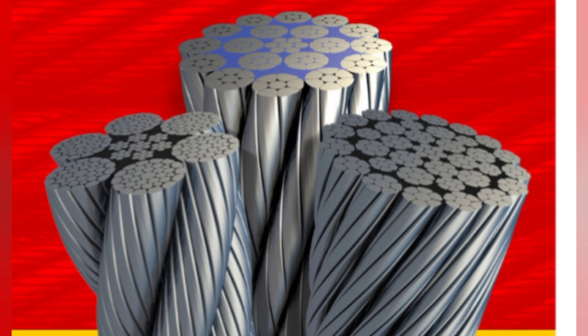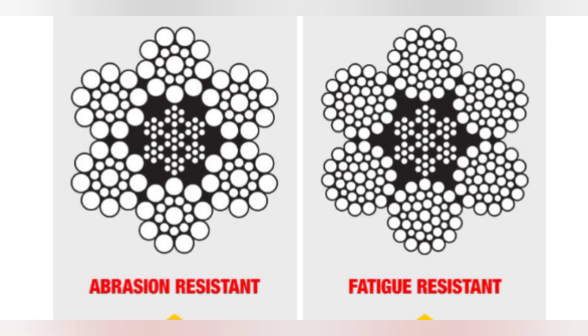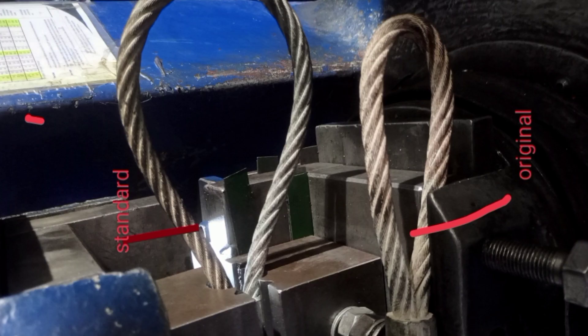Direction and type of lay refer to the way the wires are laid to form a strand — either right or left — and how the strands are laid around the core: regular lay, lang lay, or alternate lay. In regular lay, the wires line up with the axis of the rope and the direction of wire lay in the strand is opposite to the direction of strand lay; regular lay ropes are more resistant to crushing forces, more naturally rotation resistant, and spool better on a drum. In lang lay, the wires form an angle with the axis of the rope and the wire lay and strand lay go in the same direction, giving greater fatigue resistance and abrasion resistance. Alternate lay consists of alternating regular lay and lang lay strands, used mainly for special applications.